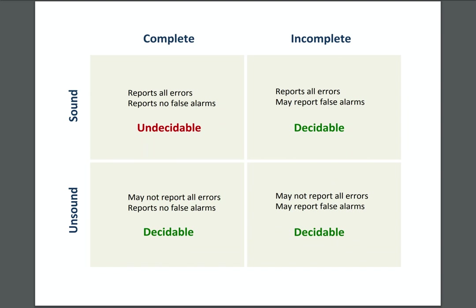What we really want is sound and complete — something that's right whenever it says something and can answer for every program. But that's not always possible. When we have a sound but not complete analysis and it can't prove the program safe, the program may either be unsafe or may be safe but the analysis is imprecise. Those kinds of warnings are called false alarms.